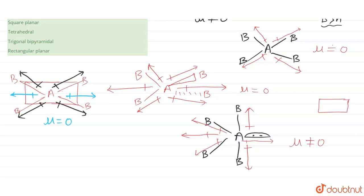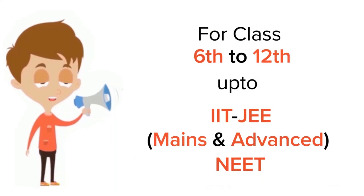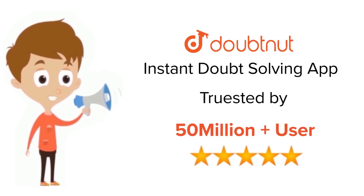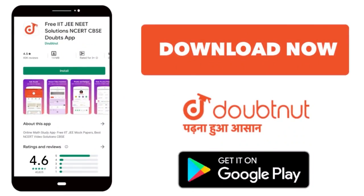If mu is non-zero, then the molecule is said to be polar. So the correct option is option C — trigonal bipyramidal. This is your answer. I hope this answers your question. Thank you. For class 6 to 12th, IIT JEE and NEET level, trusted by more than five crore students — download DoubtNet app today.